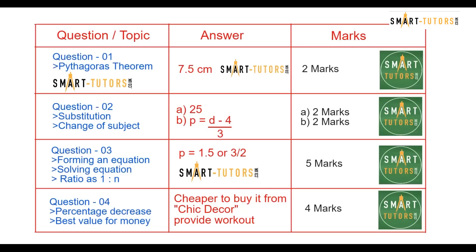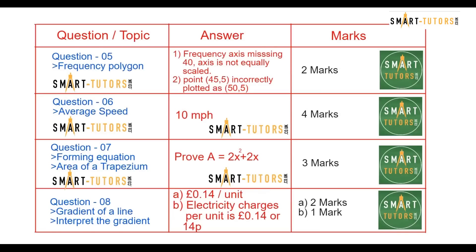Question number 4. Percentage decrease and best value for money. So there's two shops given with prices and which one is the best value for money. Question number 5. Frequency polygon is given. They ask you to identify two mistakes on the diagram. Two marks question. Question number 6. Average speed.